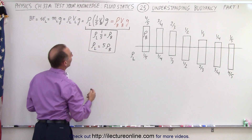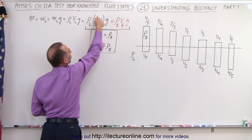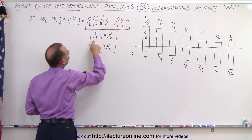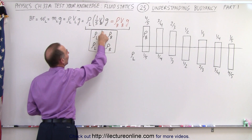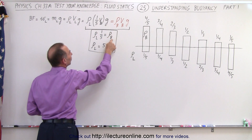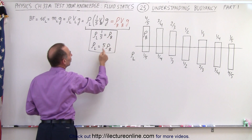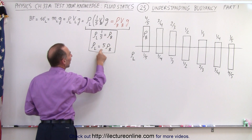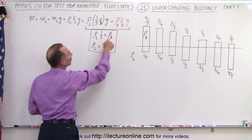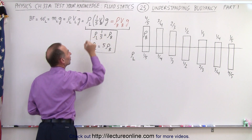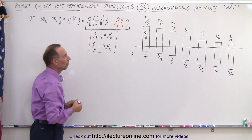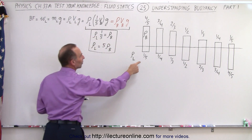If we do that, notice that the g's cancel out and the volume of the block cancels out, which means that the density of the liquid times one-fifth equals the density of the block, or that the density of the liquid is five times the density of the block, or the density of the block is one-fifth the density of the liquid.